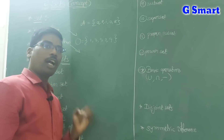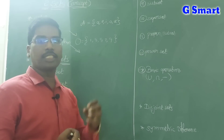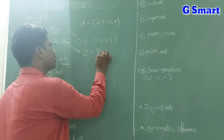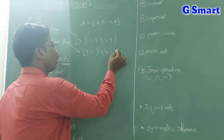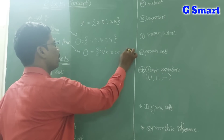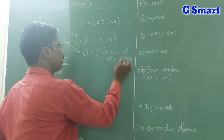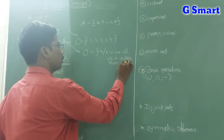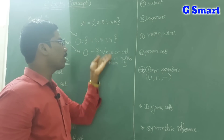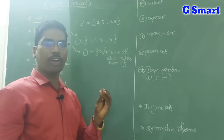Now the same thing, if I write it as a formula or rule, that is called set builder form or rule form. The set builder form is converting the roster form into a formula or rule structure. For example, O = {x | x is an odd number which is less than 11}. Less than 11 means up to 9 only. This can also be written as x such that x is a vowel in English — in English, vowels are 5: a, e, i, o, u.